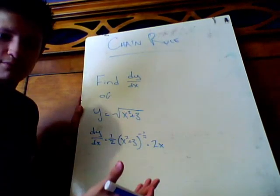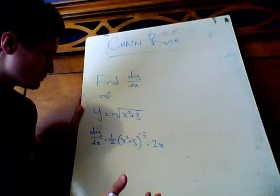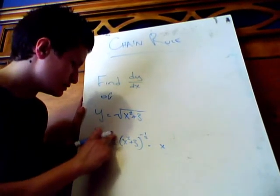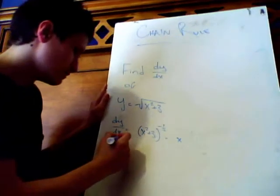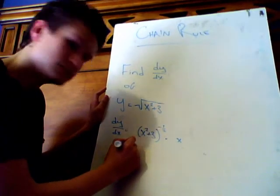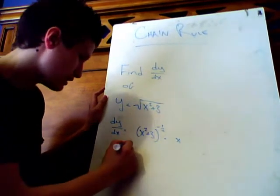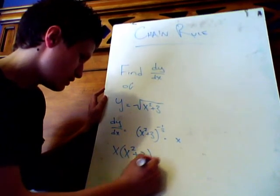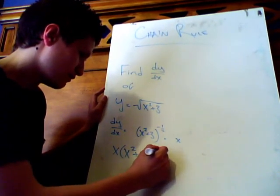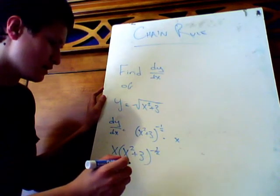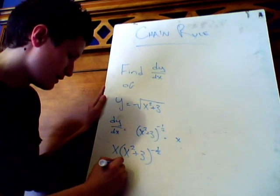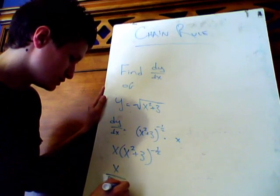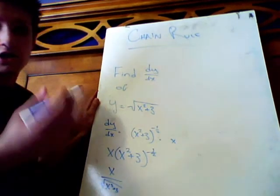Now, I'll leave the simplification up to you. Eh, why not? These two cancel. So, your final answer is going to be x times... Can you see that? x times x squared plus 3, negative 1/2. That would be x over the square root of x squared plus 3. There you go.